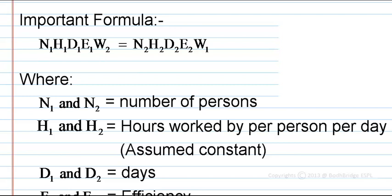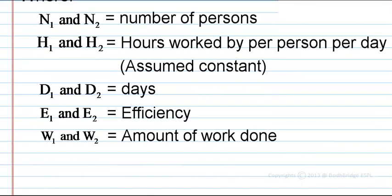N1 and N2 are the number of persons — for example, 10 men and 5 women working together, so 10 and 5 are the number of persons. H1 and H2 is the hours worked per person per day — when the value is given in hours, for example A does a piece of work in 10 hours, that value is H1 or H2. Similarly, D1 and D2 is the number of days — for example, A does work in 10 days and B does it in 20 days, so those are D1 and D2.